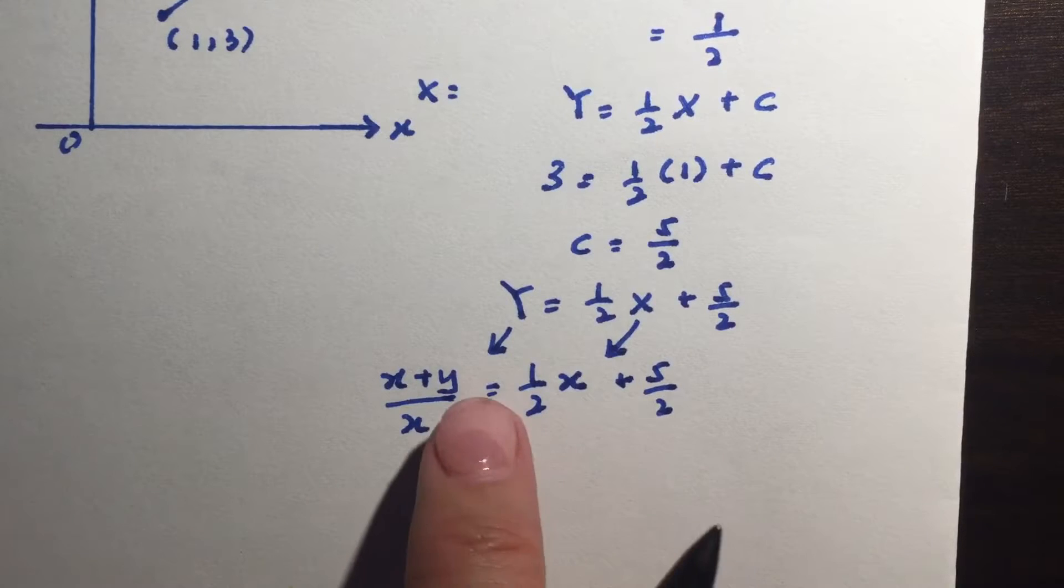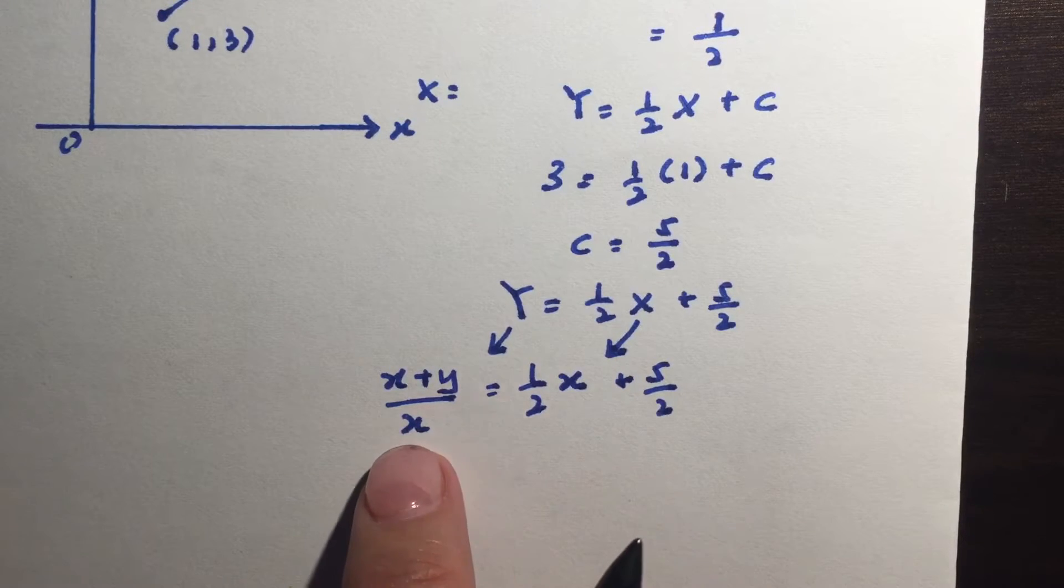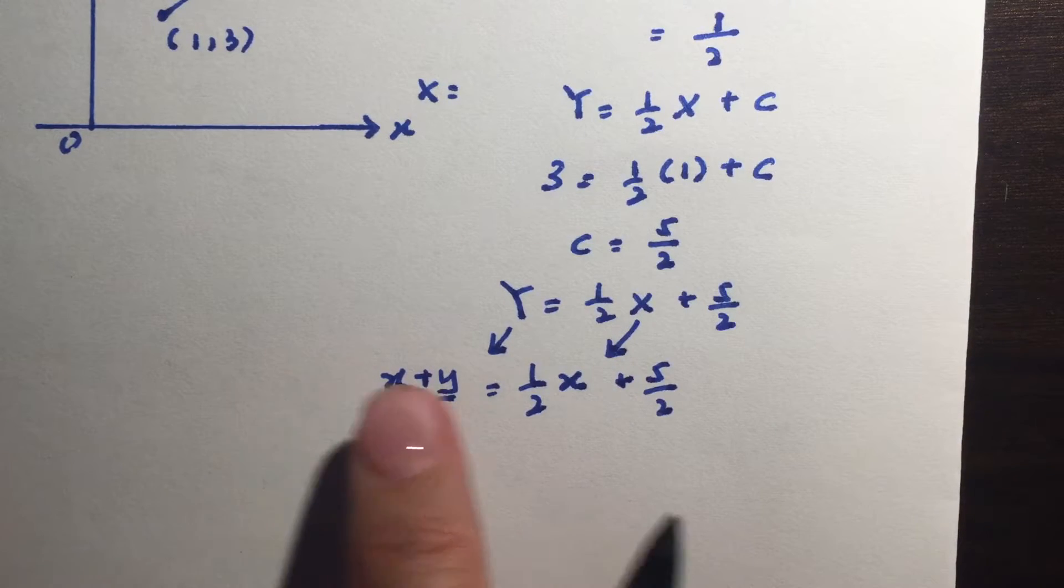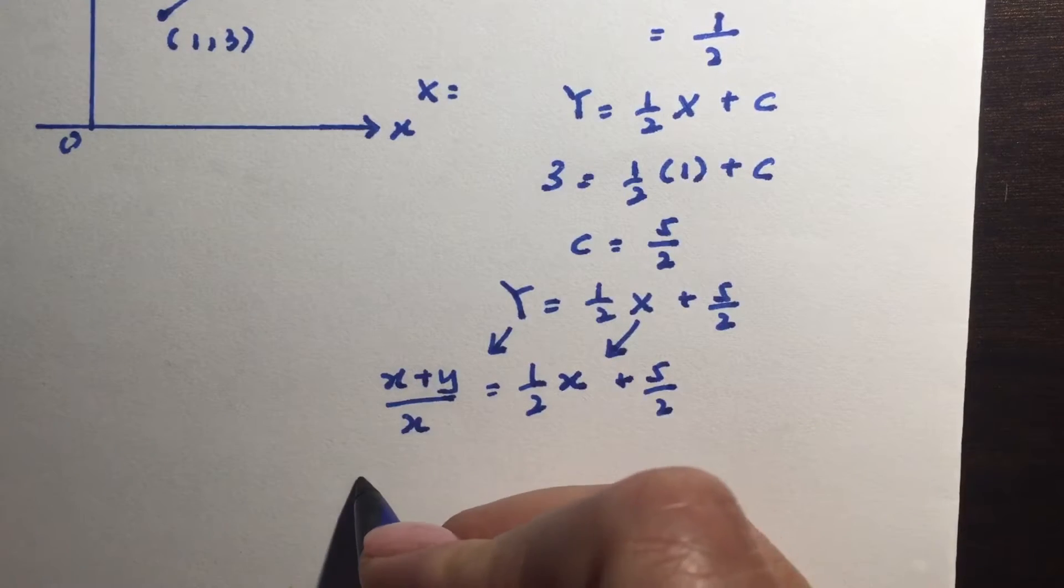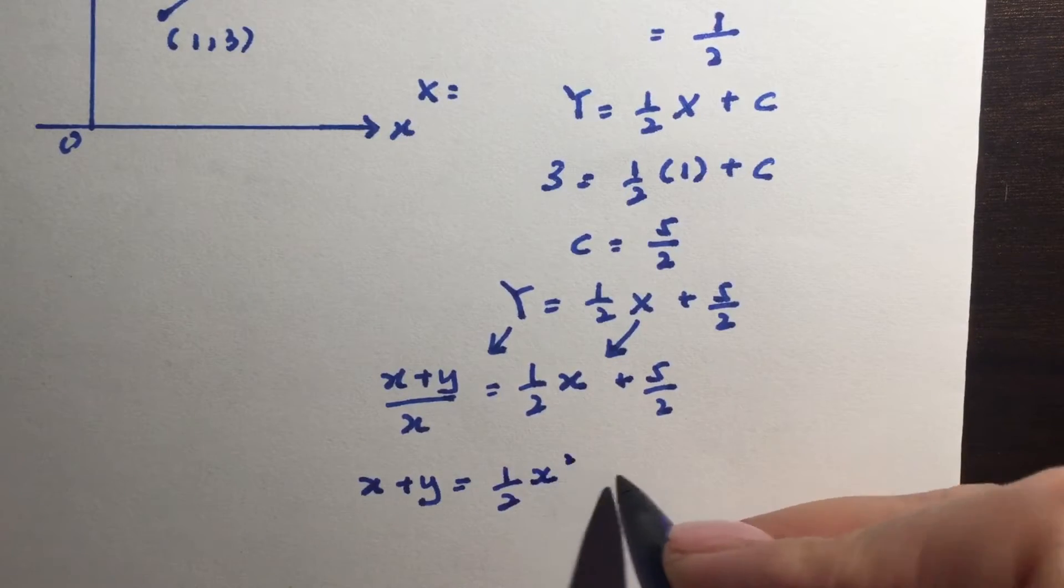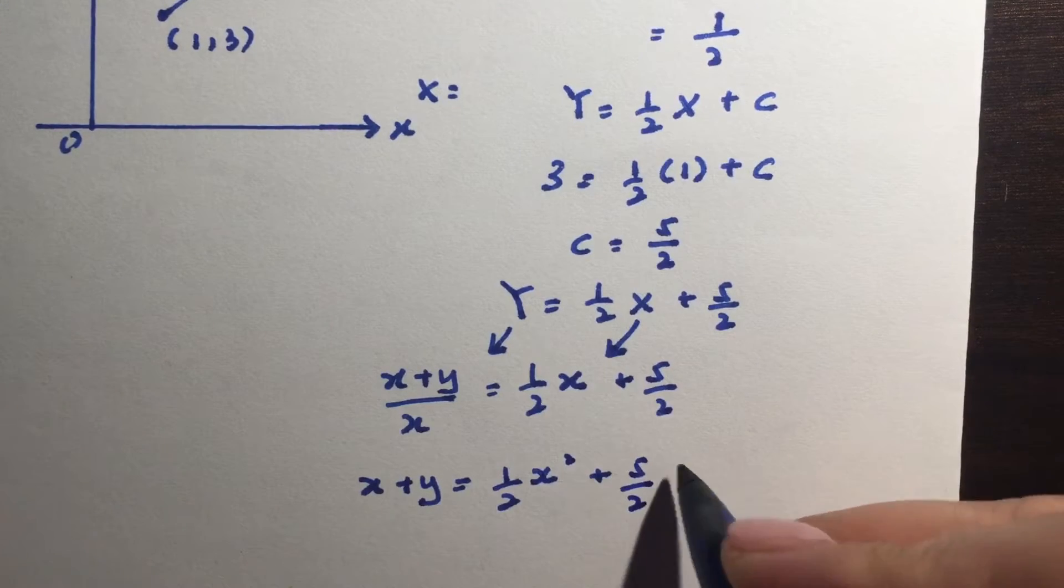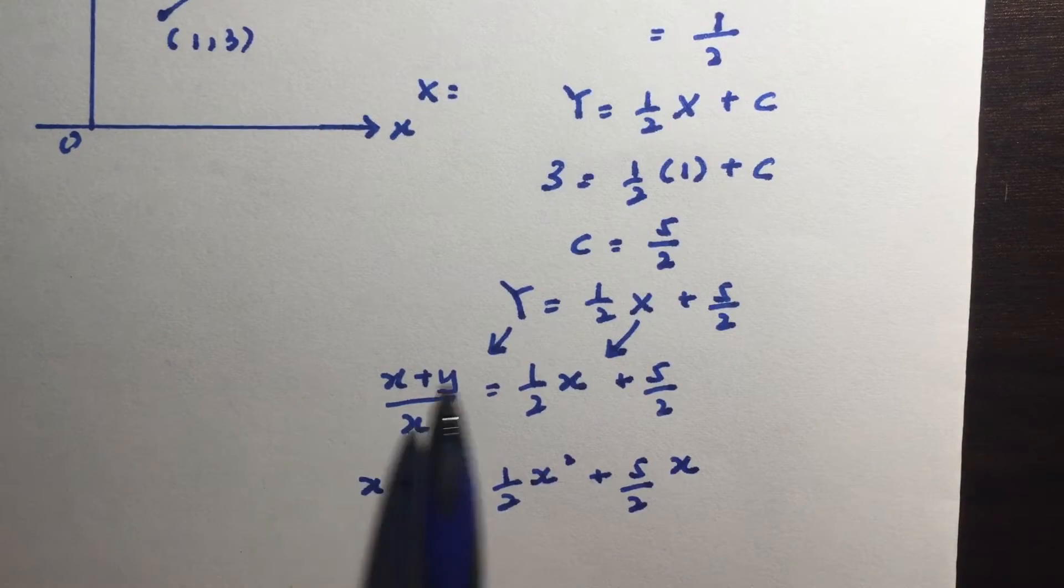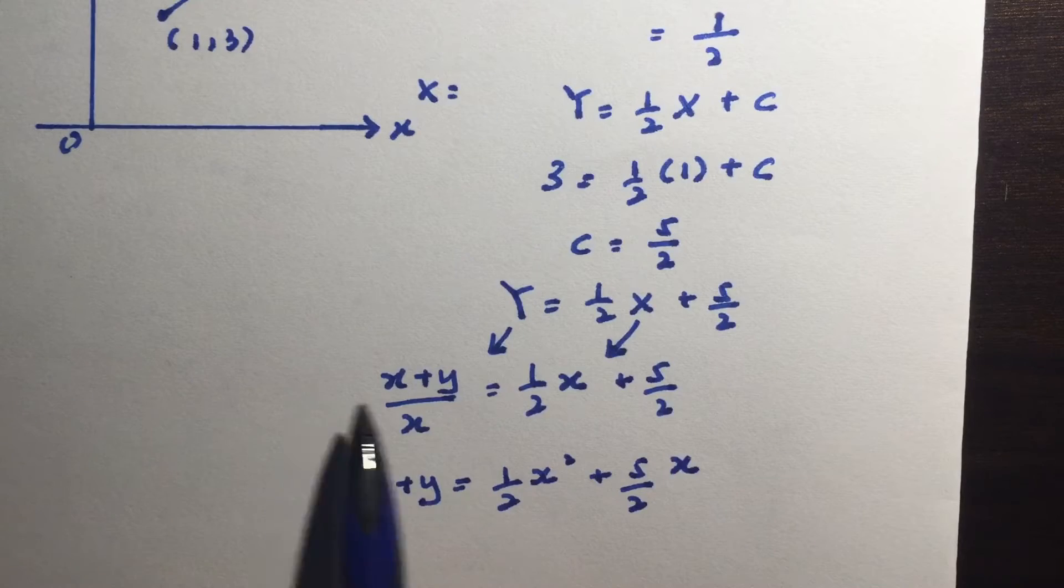Now they already mentioned that you're supposed to express y in terms of x, means I have to keep y alone. I have a denominator of x here so I'm going to multiply by x throughout. So I have x plus y equals half x squared plus 5 over 2 x.